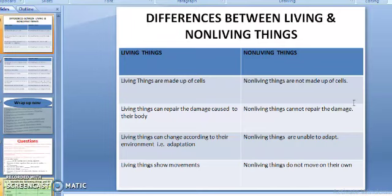Now see the differences between living and non-living things. Let's summarize the differences between living and non-living things through this table. Living things are made up of cells. Non-living things are not made up of cells. Living things can repair the damage caused to their body but non-living things cannot repair the damage. Living things can change according to their environment, that is called adaptation, but non-living things are unable to adapt. Living things show movements and non-living things do not move on their own until and unless the external force is applied.